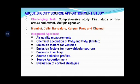There is one study carried out by the CPCB where the six-city source apportionment study was conducted, covering Mumbai, Delhi, Bangalore, Kanpur, Pune, and Chennai, where a certain amount of air pollution assessment has been done. This was a very challenging but comprehensive task — the first study of its nature and extent where multiple agencies were involved.